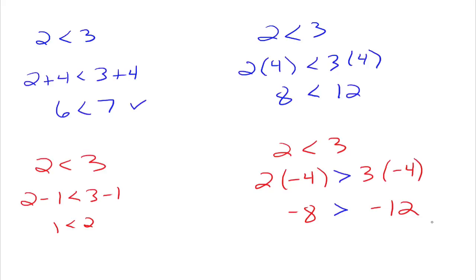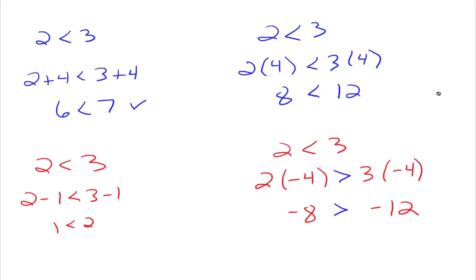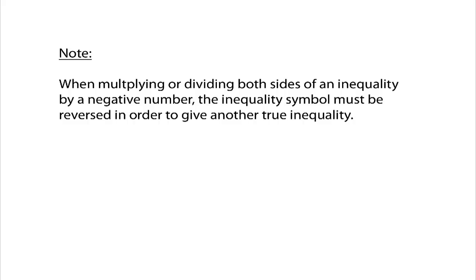This is going to be the only difference between solving a linear inequality and a linear equation. When multiplying or dividing both sides of an inequality by a negative number, the inequality symbol must be reversed in order to give another true inequality. Everything else is the same — you can add or subtract both sides by any number you want, and you can multiply or divide both sides, just like with an equation. But the catch is: if you multiply or divide by a negative number, then the inequality symbol must be reversed. Multiplying or dividing by a positive number is fine.